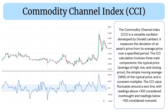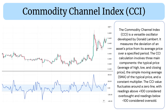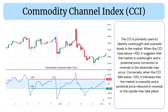Readings below -100 are considered oversold. The CCI is primarily used to identify overbought and oversold levels in the market. When the CCI rises above +100, it suggests the market is overbought and a potential price correction or reversal to the downside may occur. Conversely, when the CCI falls below -100, it indicates the market is oversold.